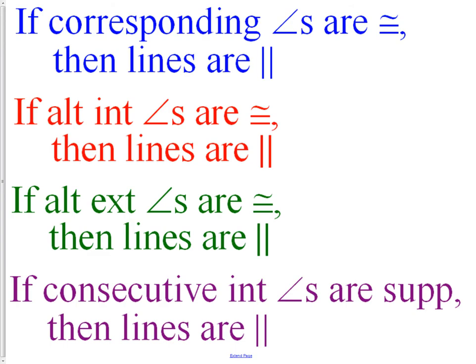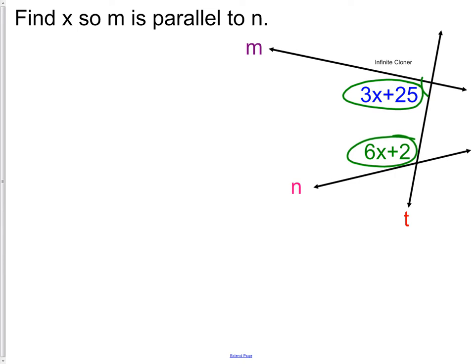We should remember from our studies in sections 1 and 2 that those are consecutive interior angles. Let's look back. If the consecutive interior angles are supplementary the lines are parallel. What we need to do is we need to prove that 3x plus 25 plus 6x plus 2 equals 180 has a value of x in which this works. If we can find a value of x that makes this work then we can say lines m and n are parallel.